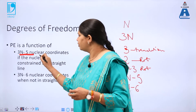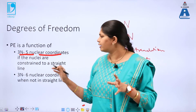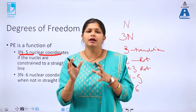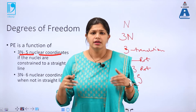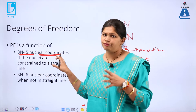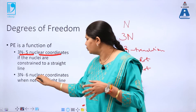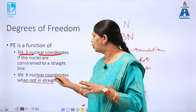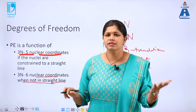So 3n minus 5 nuclear coordinates are required if you are making a graph of potential energy versus coordinates for a linear molecule. How many coordinate dimensions do you have? 3n minus 5 for linear, and 3n minus 6 when the nuclear coordinates are not in a straight line — that is, for a non-linear molecule.